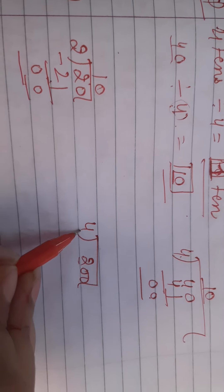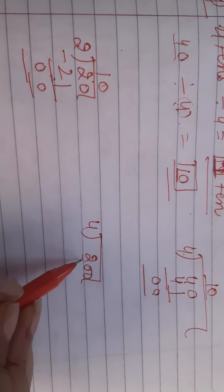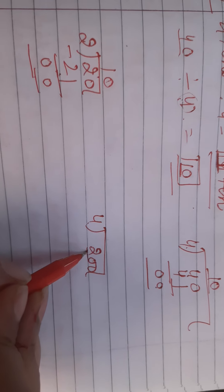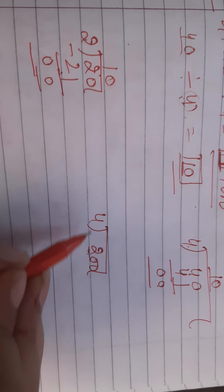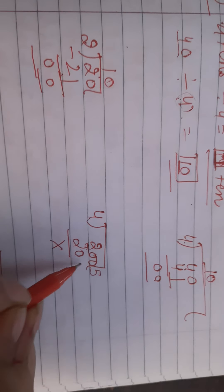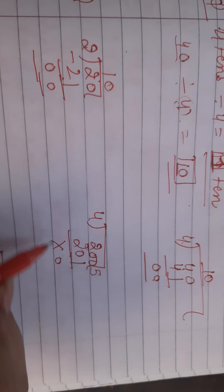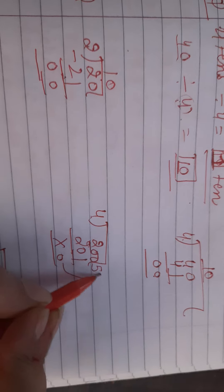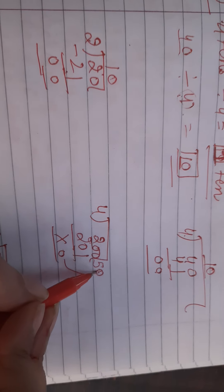Now I have to divide this. 2 is smaller than 4, so we will go with 2 digits, that is 20. As we know from the table of 4, 4 fives are 20, and this 0 will go there. So our answer will be 50.